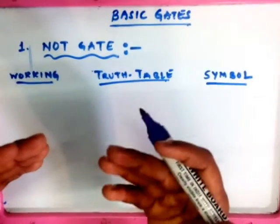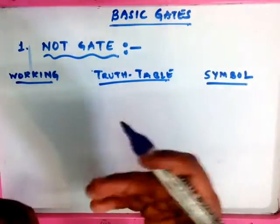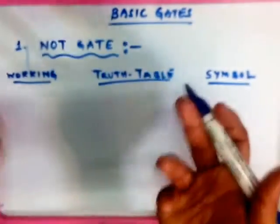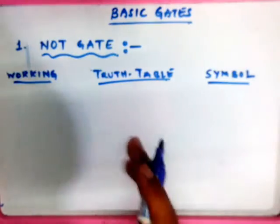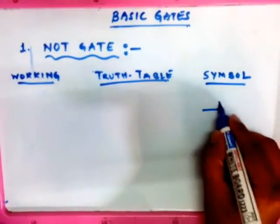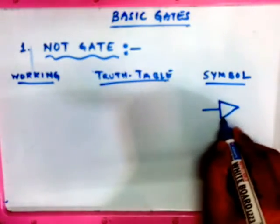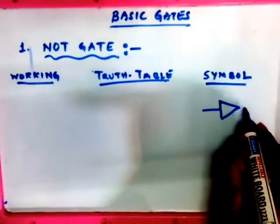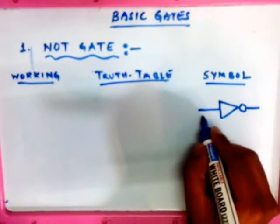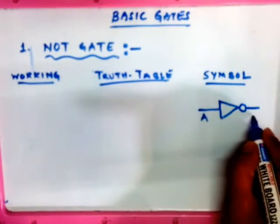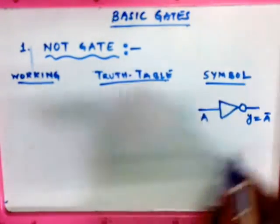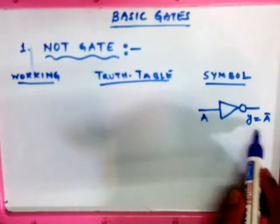Whatever input you give as high, the output will be low, and if you give the input as low, the output will be high. You can look at the symbol here — it is an arrow-mark type of symbol, and in front of it there is one bubble which indicates it is inverted. The equation for the NOT gate is Y equals A-bar.